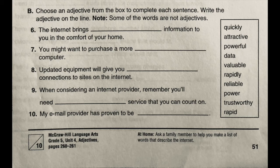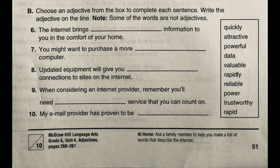Now let's look at Part B on page 51. The instructions say: choose an adjective from the box to complete each sentence and write the adjective on the line. Note: some of the words in the box are not adjectives. There are more than five words in the box but only five questions, so not all of them are adjectives. To tell if a word is an adjective, ask: does it tell what kind, how many, or which one? If not, it's not an adjective.